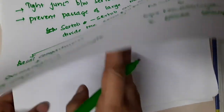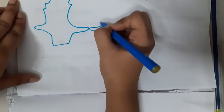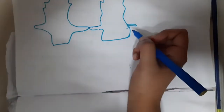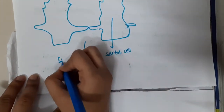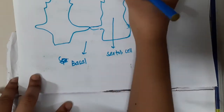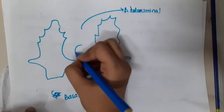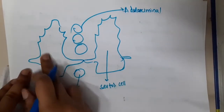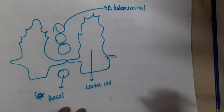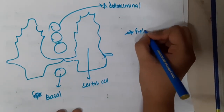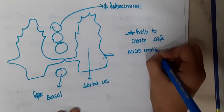Let me draw a diagram of the Sertoli cells. Here you can see the spermatogonia — this is the basal compartment — and this is the ad luminal compartment, where you see the development of sperms. The Sertoli cell junctions have divided the compartments, and this division helps to create a safe microenvironment for sperm production, so there won't be any aberrations of the sperm.